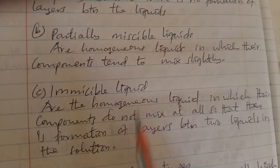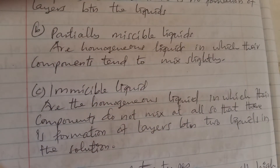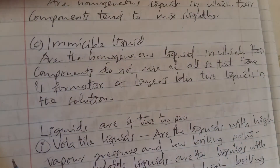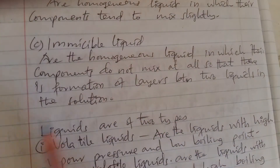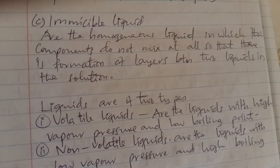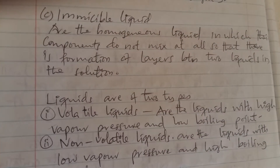The second type is partially miscible liquids — homogeneous liquids in which the components mix only slightly, not completely as in miscible liquids. Immiscible liquids are liquids in which the components do not mix at all, forming distinct layers. This is due to the difference in intermolecular forces of attraction. The similarity or difference in intermolecular forces is the major factor determining the extent of mixing.